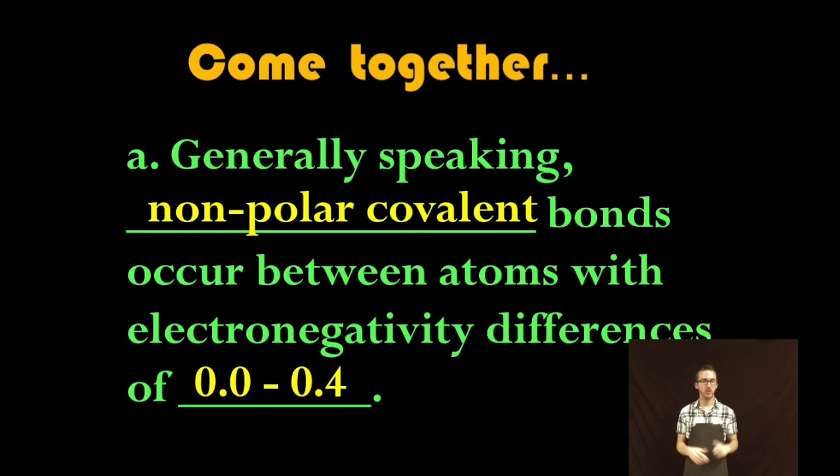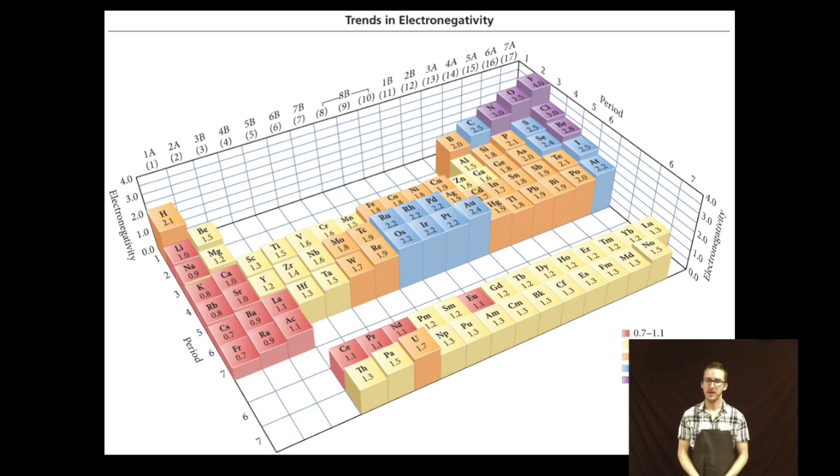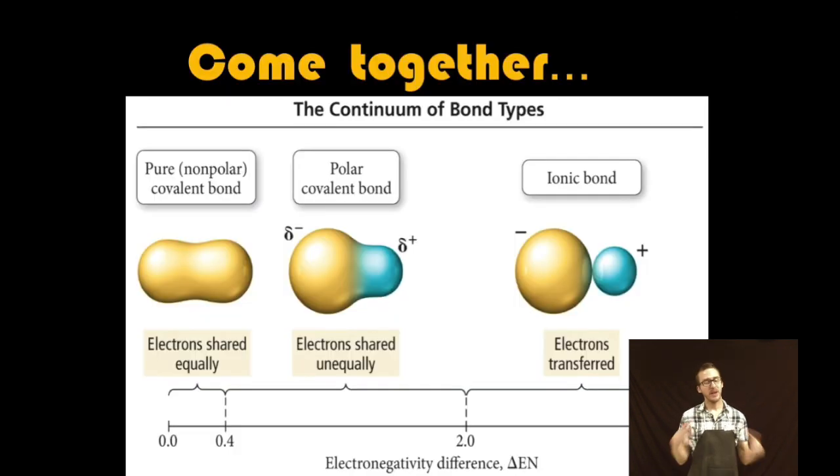Generally speaking, nonpolar covalent bonds occur between atoms with electronegativity differences of zero to 0.4. And as you look at a periodic table of electronegativity, basically what we're saying is the atoms in order to be nonpolar covalent and share their electrons equally need to have relatively similar levels of attraction for that pair of electrons. So as you take a look at your notes, I really love this image. It sums up all the bonding types that we've talked about. Notice that on the left of the spectrum there we have nonpolar covalent bonds. Here the electrons are shared equally. There's very little to no electronegativity difference between those atoms.